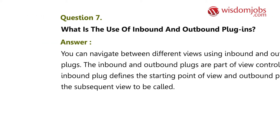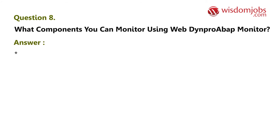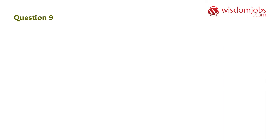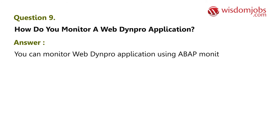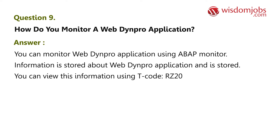Question 8: What components can you monitor using WebDynpro ABAP Monitor? Answer: Session count, application count, CPU time, and data. Question 9: How do you monitor a WebDynpro application? Answer: You can monitor a WebDynpro application using the ABAP Monitor. Information is stored about the WebDynpro application, and you can view this information using T-code RZ20.